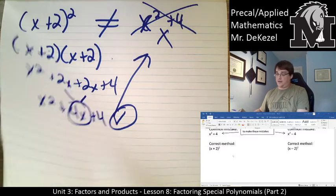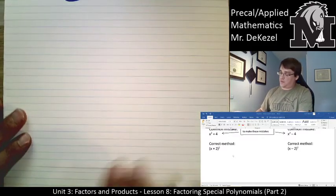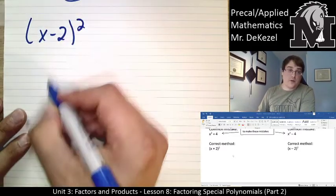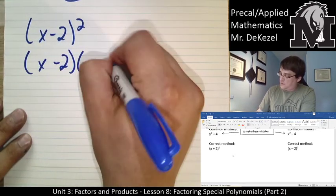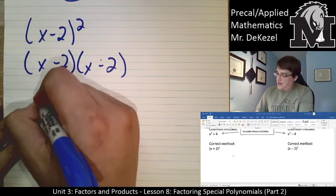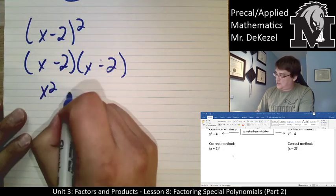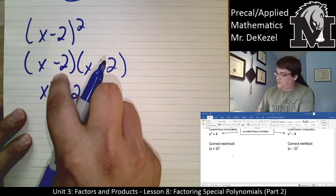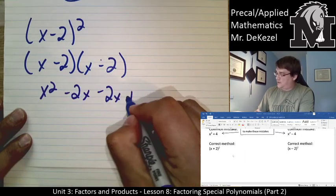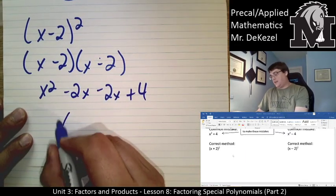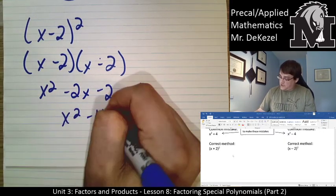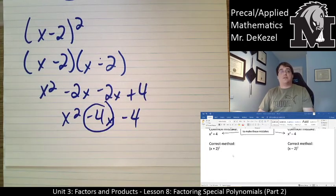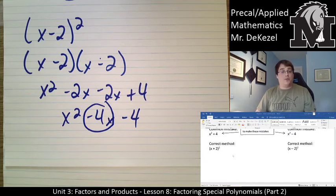The same applies to (x minus 2) squared. We cannot just square each term. Write it as (x - 2)(x - 2) and FOIL: x squared, minus 2x, minus 2x, plus 4. Combining the middle terms gives x squared minus 4x plus 4. Again, there's a middle term we would have completely missed if we'd just squared both terms.